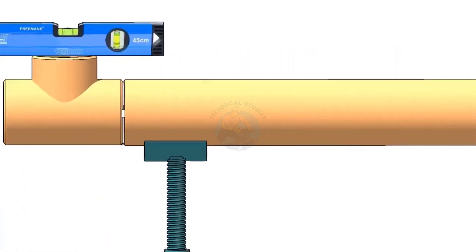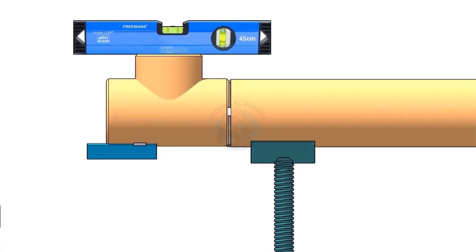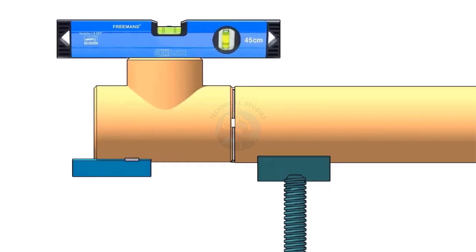Tack weld a piece of angle below the tee if you don't have a ready-made pipe clamp. The size of the angle cleat may vary according to the size of the elbow. Here I am using a 50 by 50 angle because the pipe size is 6 inch.